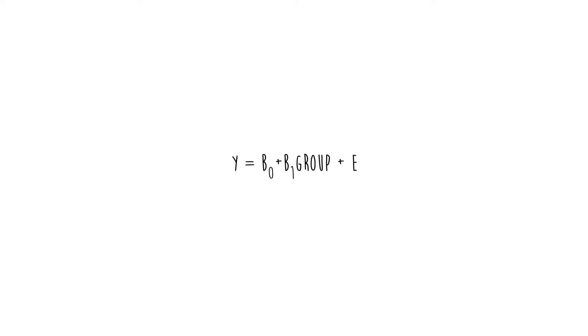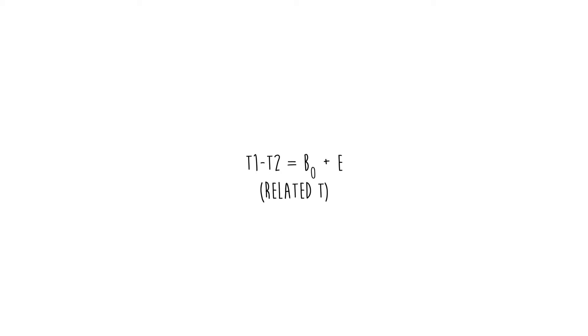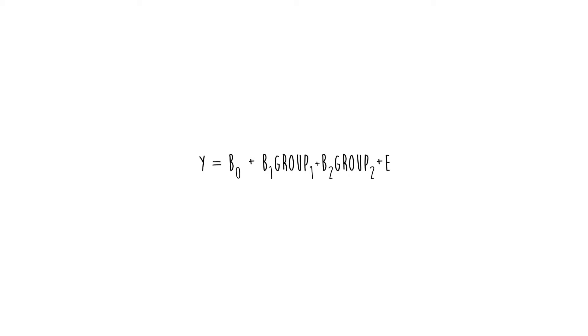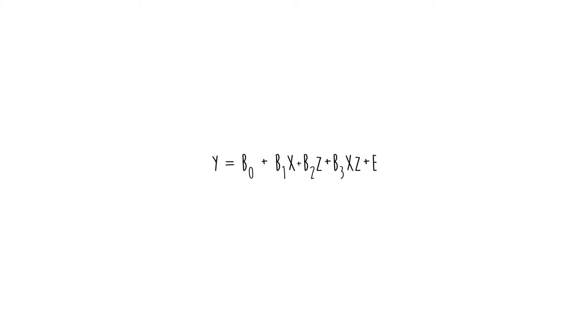The general linear model is your tool. And why does this matter? Because it's going to be very different from any other statistics class. They're going to teach you about t-tests, ANOVAs, regressions, factorial ANOVAs, multiple regression, ANCOVA — but it's all the general linear model. Y equals b0 plus e — that's a one-sample t-test. Y equals b0 plus b1 times group plus e — that's an independent t-test. Time 1 minus time 2 equals b0 plus e — that's a related t. Y equals b0 plus b1 times group 1 plus b2 times group 2 — that's an ANOVA. Y equals b0 plus b1 times x plus b2 times group — ANCOVA. Y equals b0 plus b1x plus b2z plus b3xz — that's multiple regression.